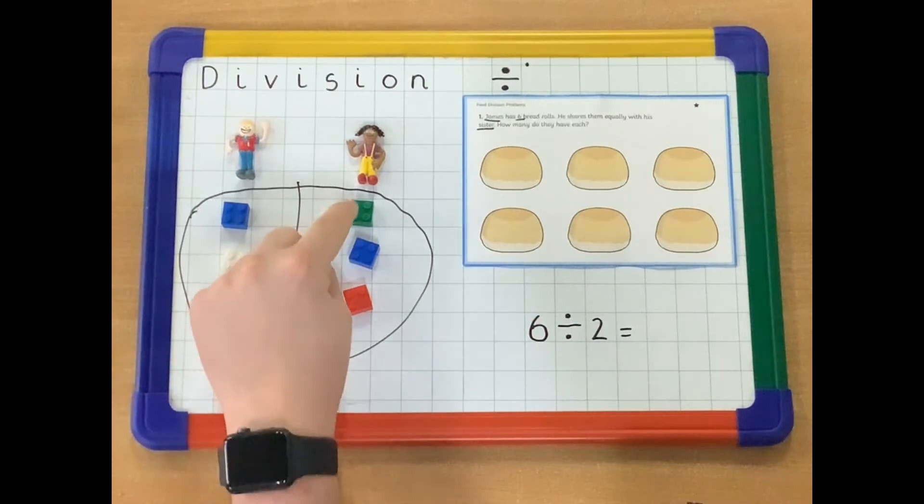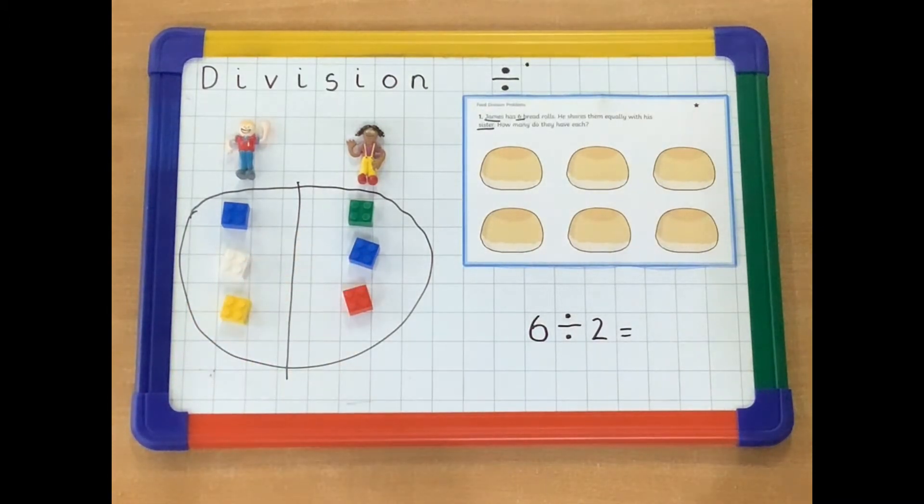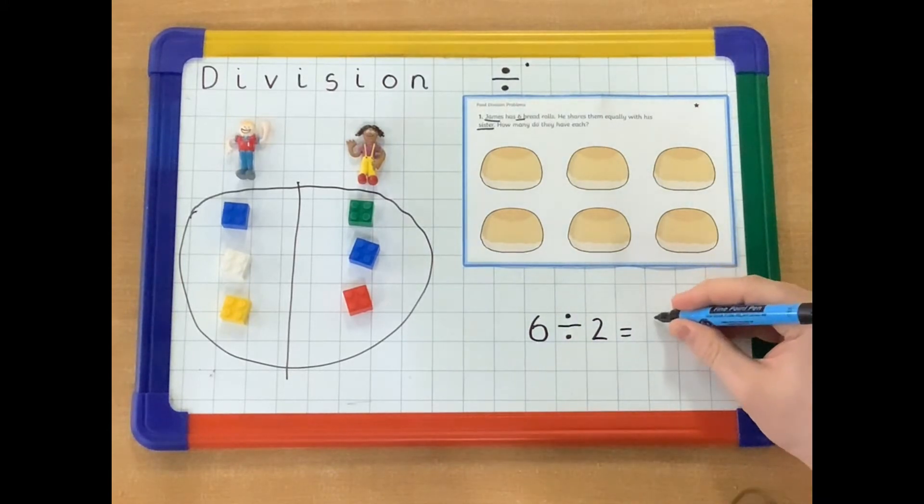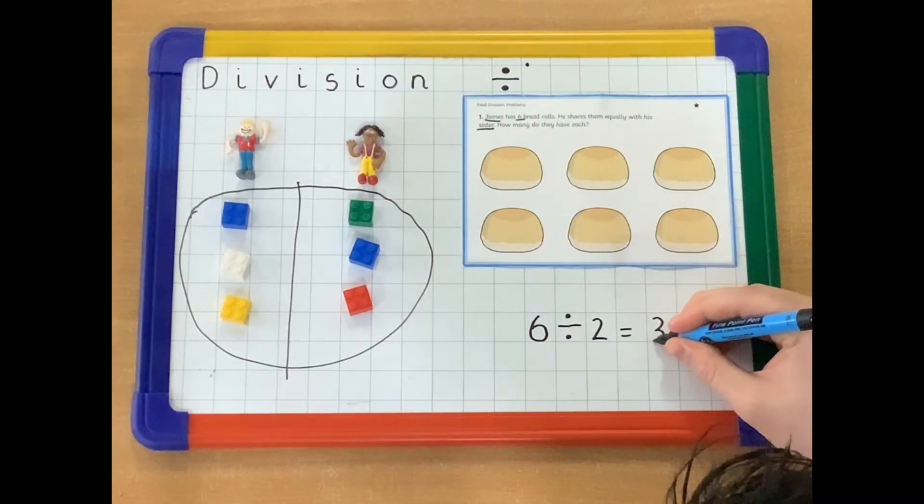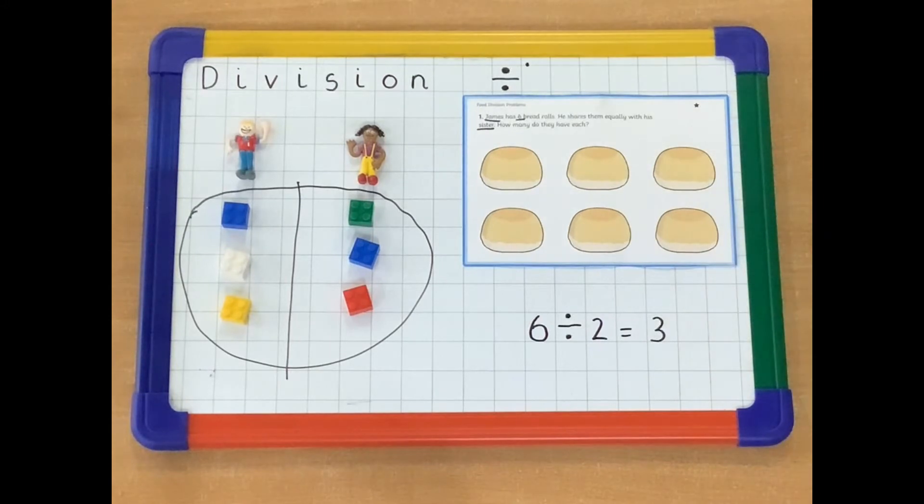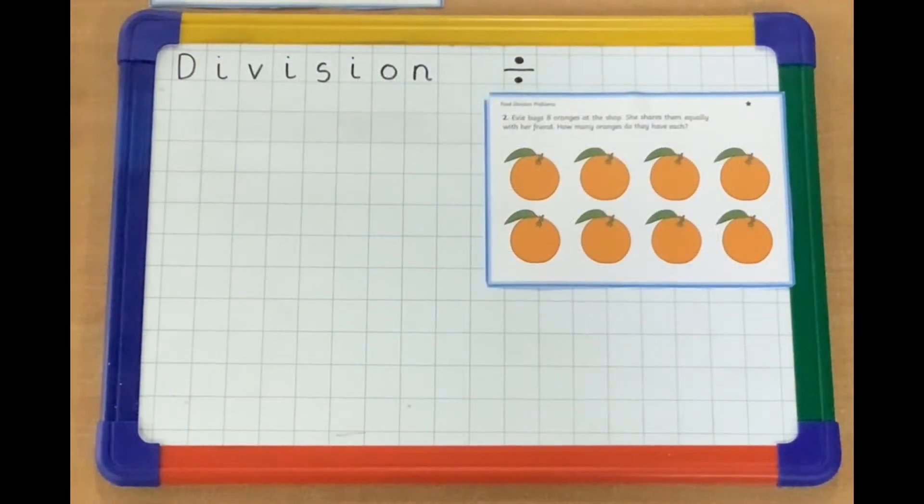One, two, three. One, two, three. They have. So six divided by two, or shared by two, gives us the answer, three. They each have three. Let's try another one.